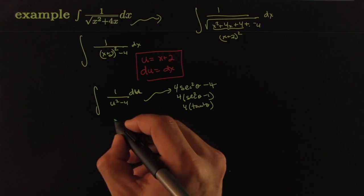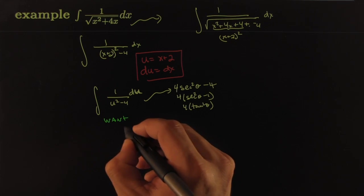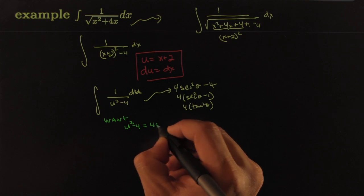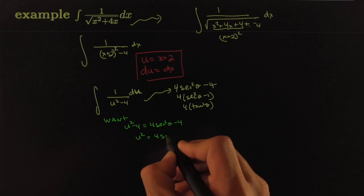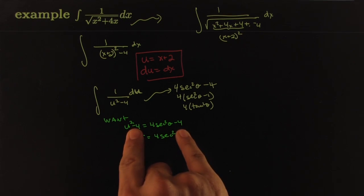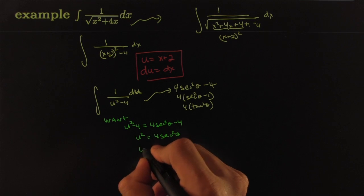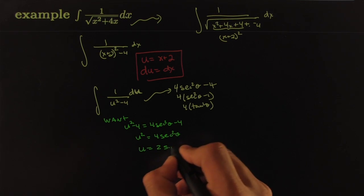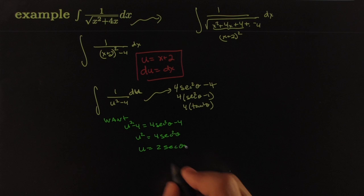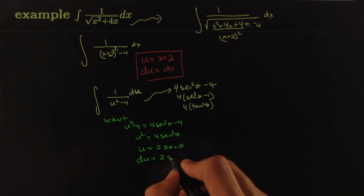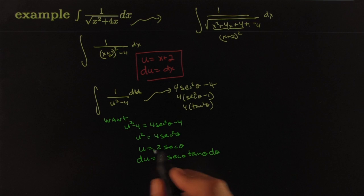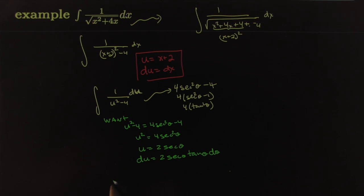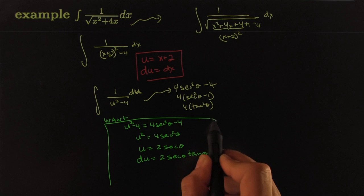We want u² − 4 = 4sec²θ − 4, so u² = 4sec²θ, meaning u = 2secθ. Differentiating both sides gives du = 2secθ tanθ dθ. This completes the substitution dictionary. We might also need a reference triangle later, but we can build that when needed.